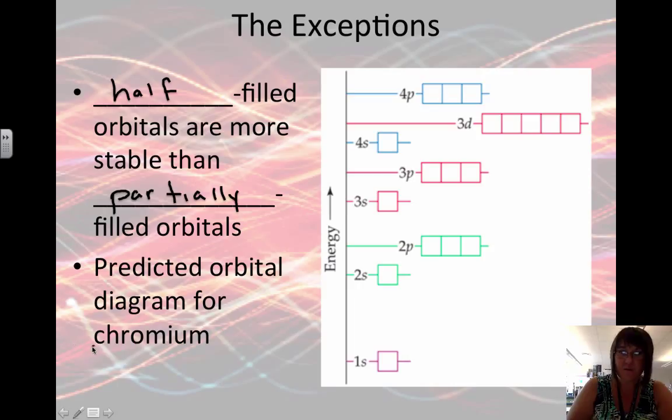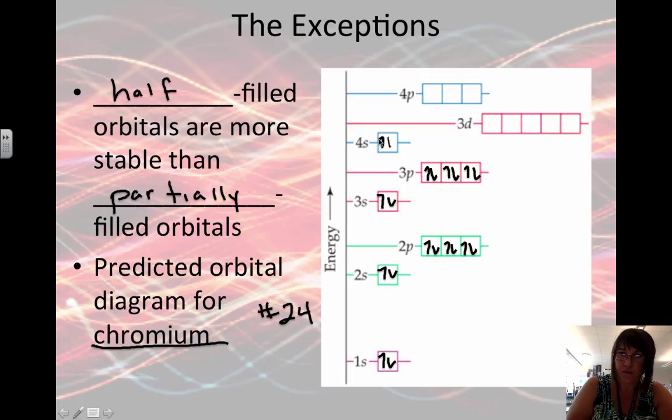Let's look at the predicted orbital diagram for the element chromium. Chromium is element number 24 on the periodic table, so I need 24 electrons. If I put it the way I would normally put, I would have 4 electrons in the d orbital, and that leaves this space right here empty. So if I had just one more electron there, I could make the whole thing much more stable. And so that's what chromium does.